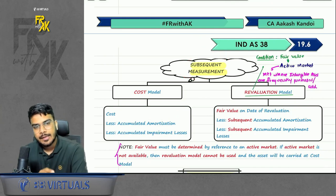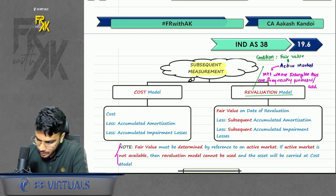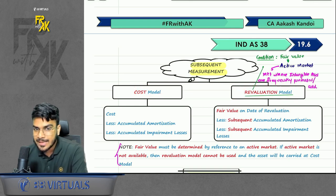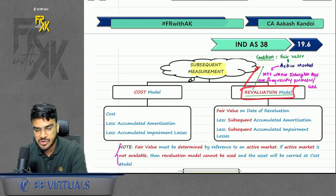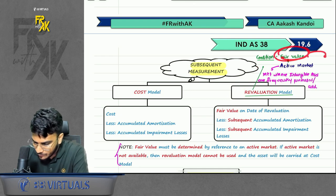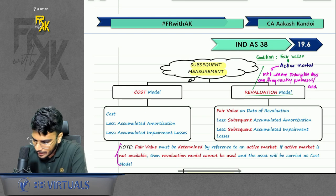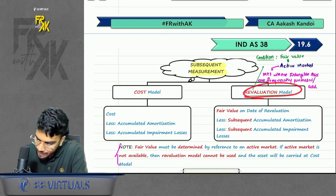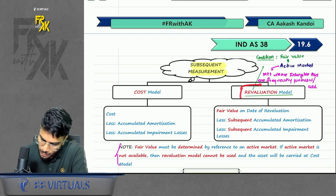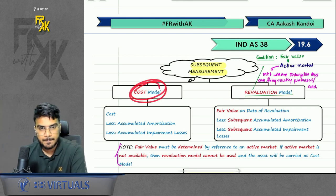Next point is subsequent measurement — same as Ind AS 16, we have two models: cost and revaluation. But in the revaluation model there is one extra point not present in Ind AS 16: if you want to follow the revaluation model, you have to find the fair value from an active market. If an active market does not exist, then you cannot follow the revaluation model. Active market is a market where the intangible can be frequently bought and sold. If you don't have an active market, by default you have only one model — the cost model.